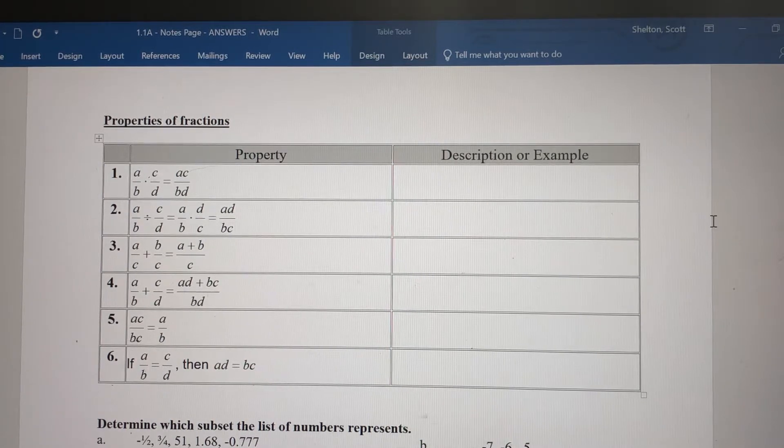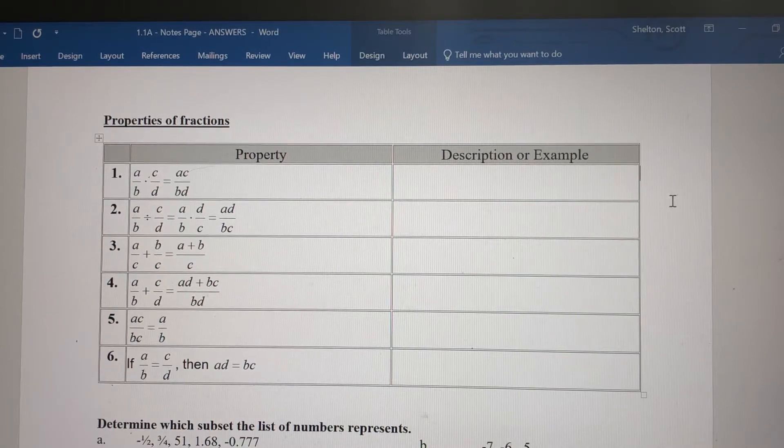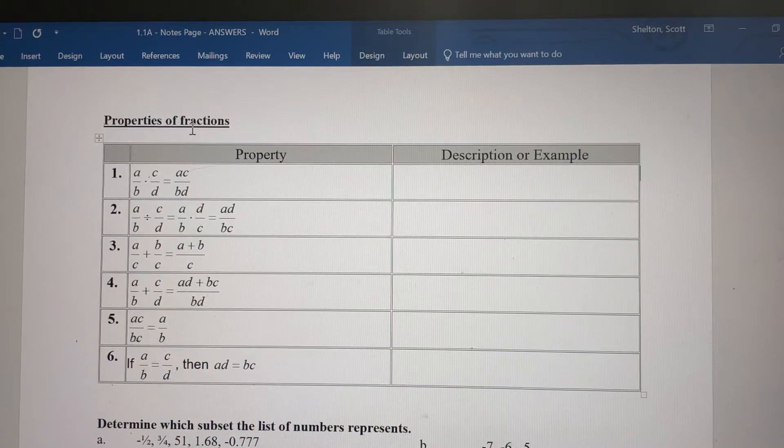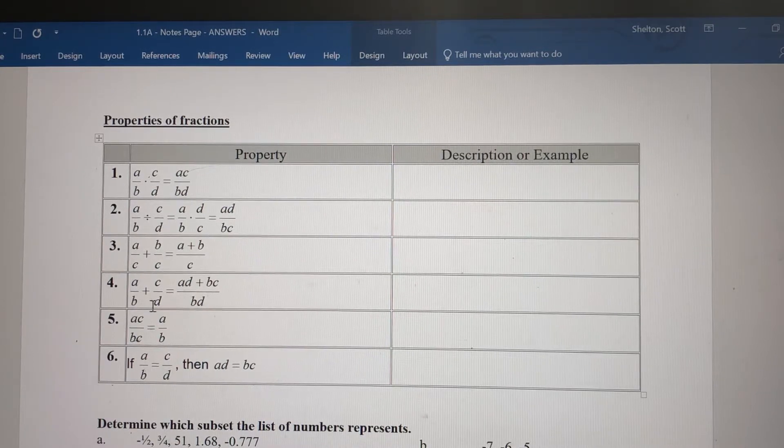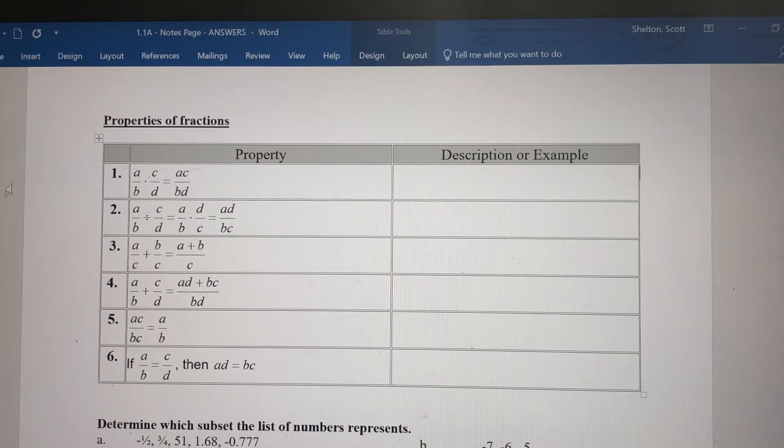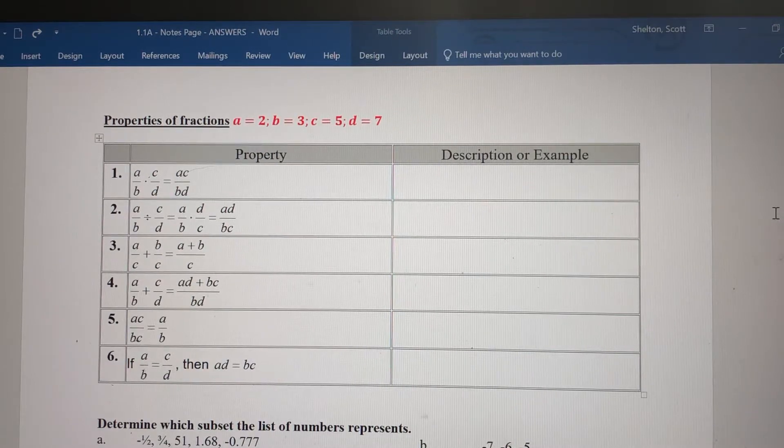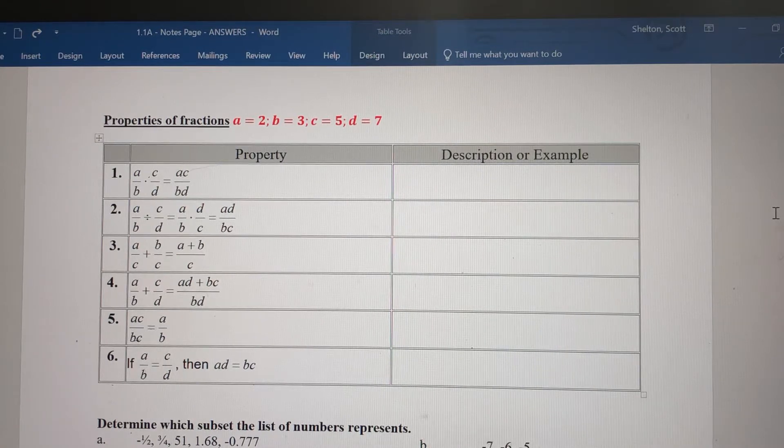In this video we're going to finish up the notes on 1.1a, covering properties of real numbers and properties of fractions. In the list of properties, we've got four different values we need: A, B, C, and D. I'm going to prescribe values for those. A is 2, B is 3, C is 5, and D is 7.